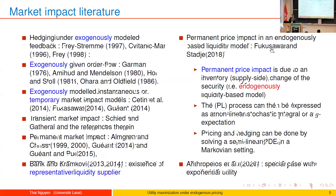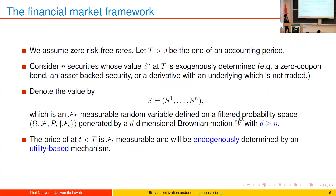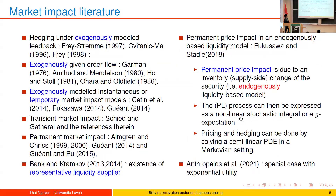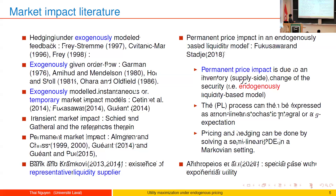The intersection of the Bank–Kramkov setting and the setting in the style of Hu, Imkeller, and Müller has been considered in a paper by Anthropelos and Žitković, where they have a very special case with an exponential utility function. However, the problem of the optimal portfolio of the large trader has not been considered in any of the papers just mentioned — and this is where we are trying to contribute.